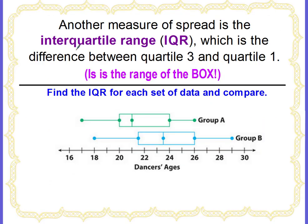Another measure of spread is the interquartile range, also known as the IQR, and this is the difference between quartile three and quartile one — basically the range of the box area. Here we have our dancers' ages again. The highest value of the box area is at 24 for group A, and we subtract the lowest box value, which is at 20.